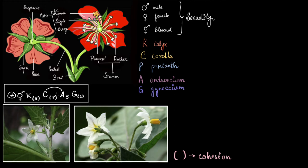Next to androecium we have G for gynoecium — the ovaries, the female part, including the style. In this flower we have two female parts and both of them are fused, as you can see from the brackets.